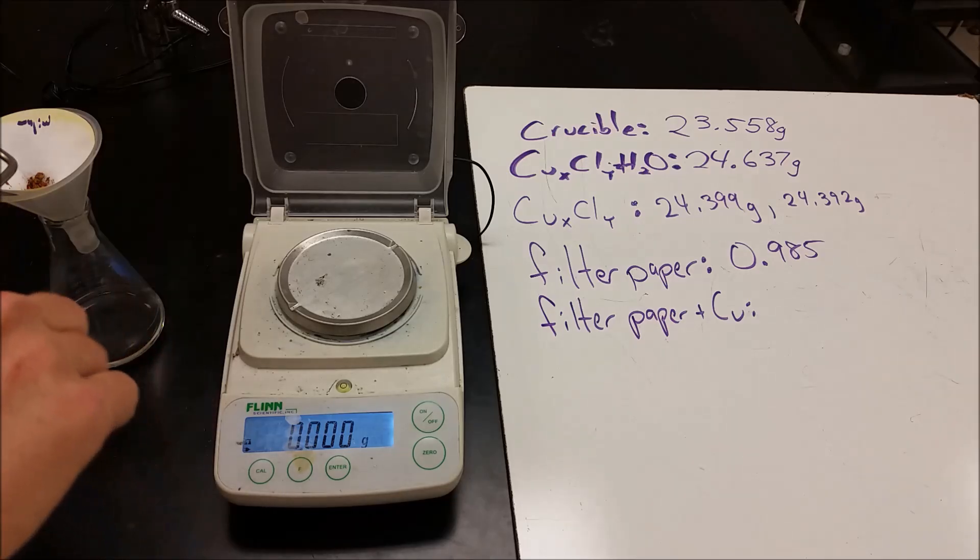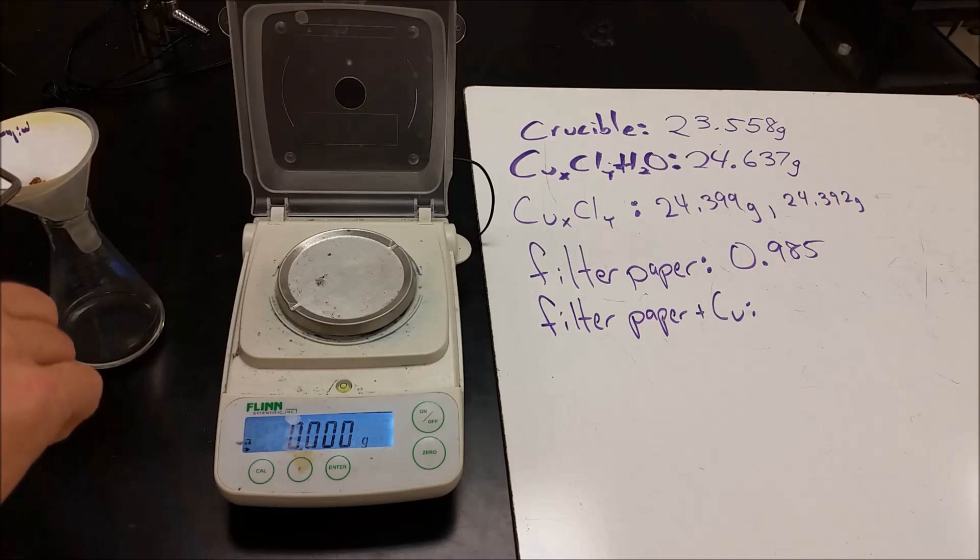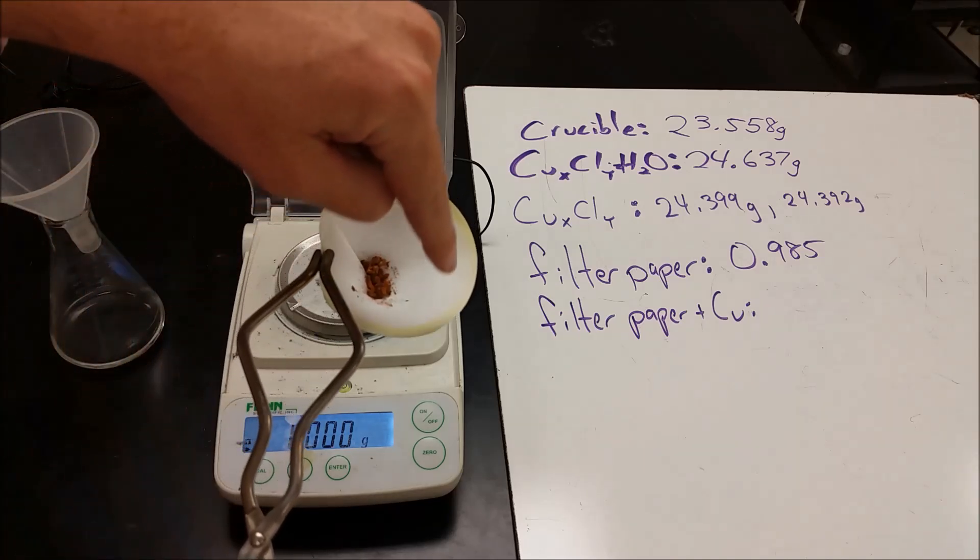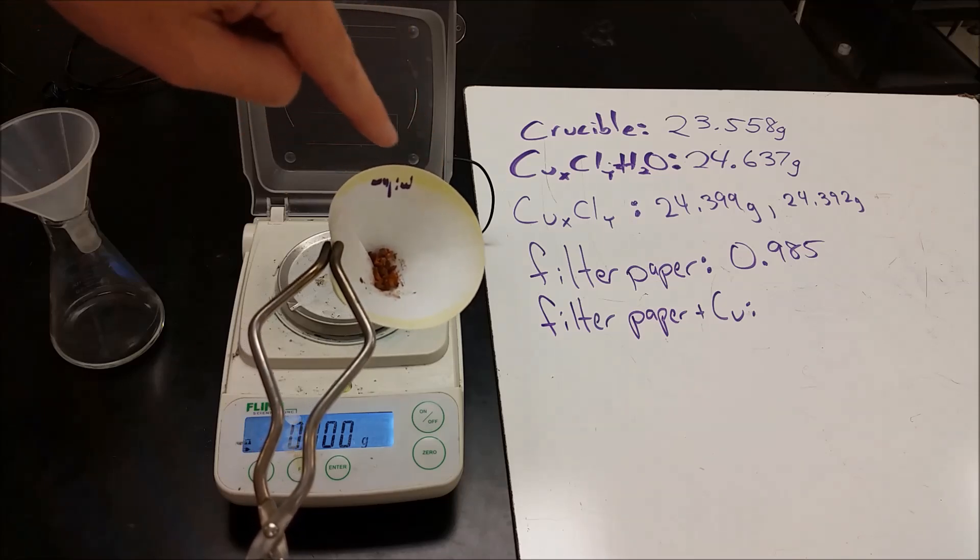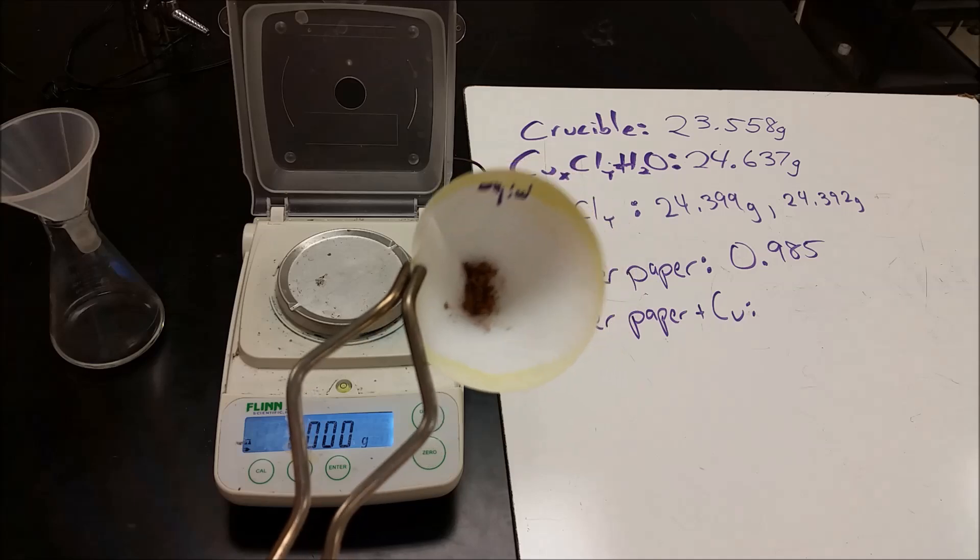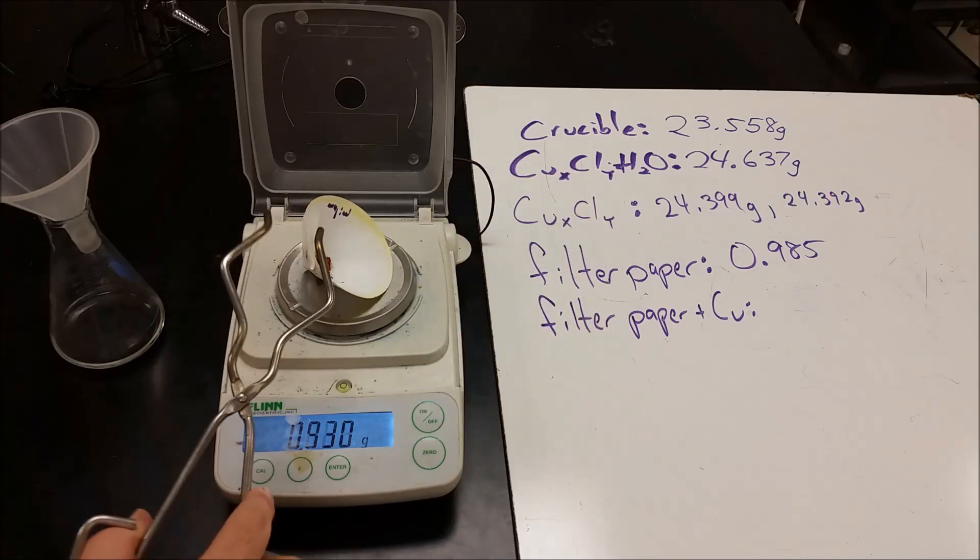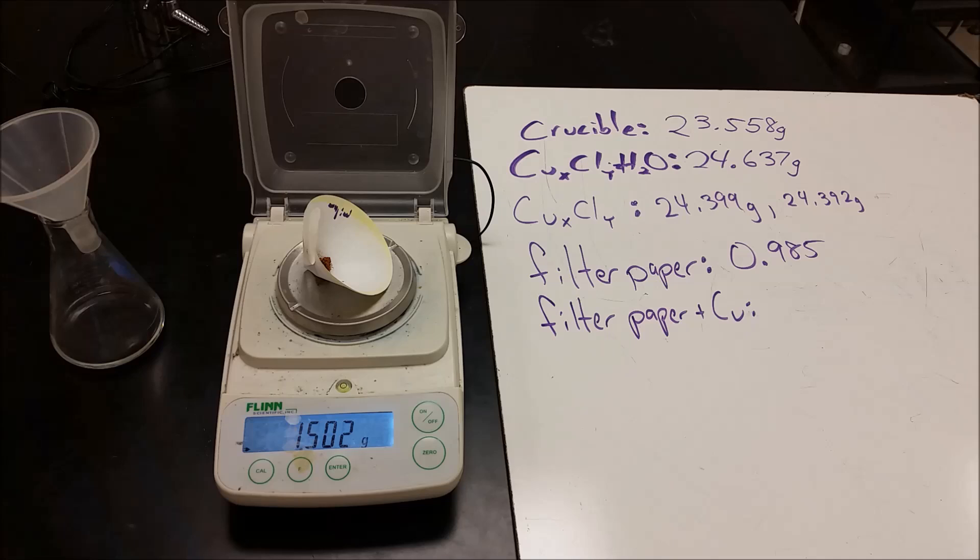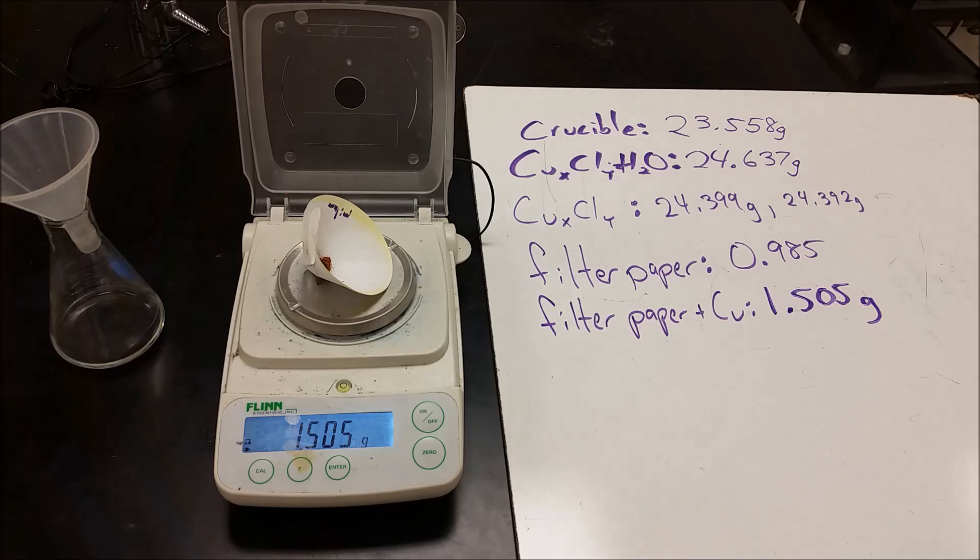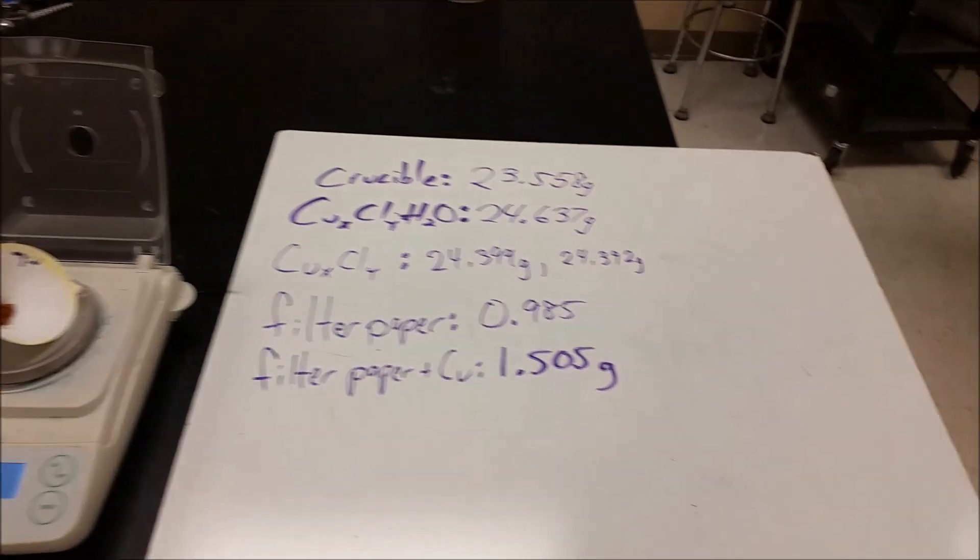So on our last step here, we're just going to get the mass of the copper that's left in our filter paper. And you can see we have a little bit of residue here, which means that we didn't properly wash completely the filter paper, but otherwise we have our pure copper there. And we're going to set that on here. So the difference between that and our filter paper, we can then go ahead and figure out how much copper there is.